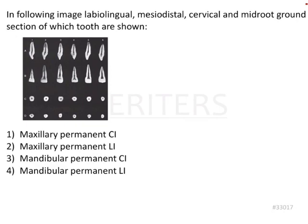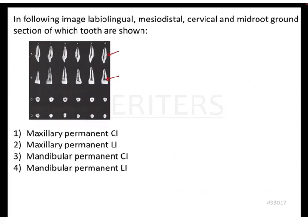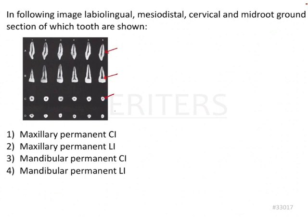In the following image, labiolingual, mesodistal, cervical, and mid-root ground sections of which tooth are shown? If you just try to see here, you will be able to see the labiolingual portion — that means the mesial or distal aspect of the tooth. Then the mesodistal view shows either the lingual or buccal aspect of the tooth, followed by cross-sections at the cervical area and finally at the mid-root level.